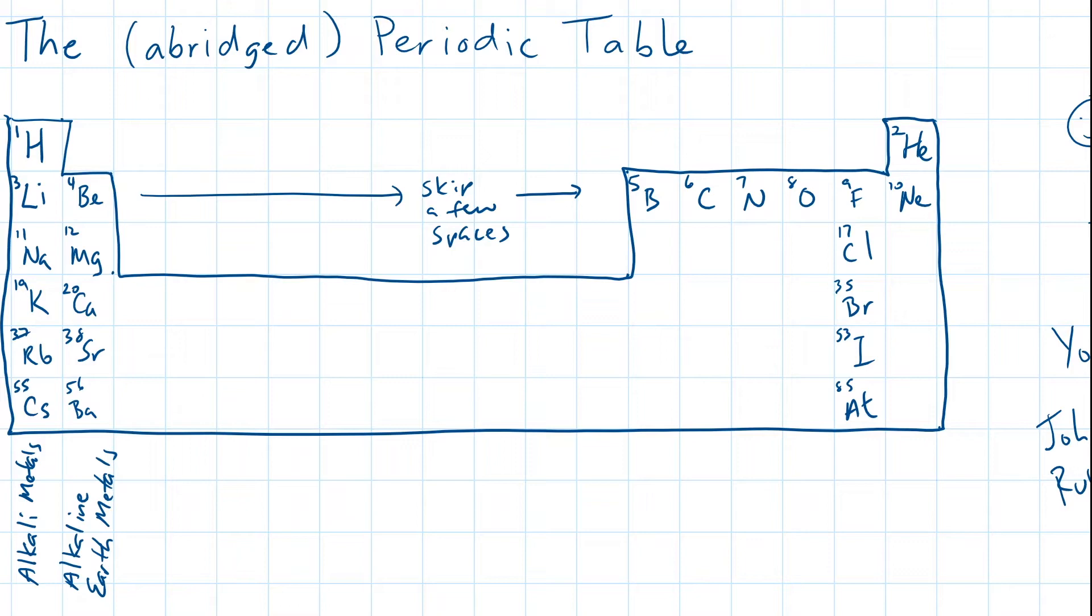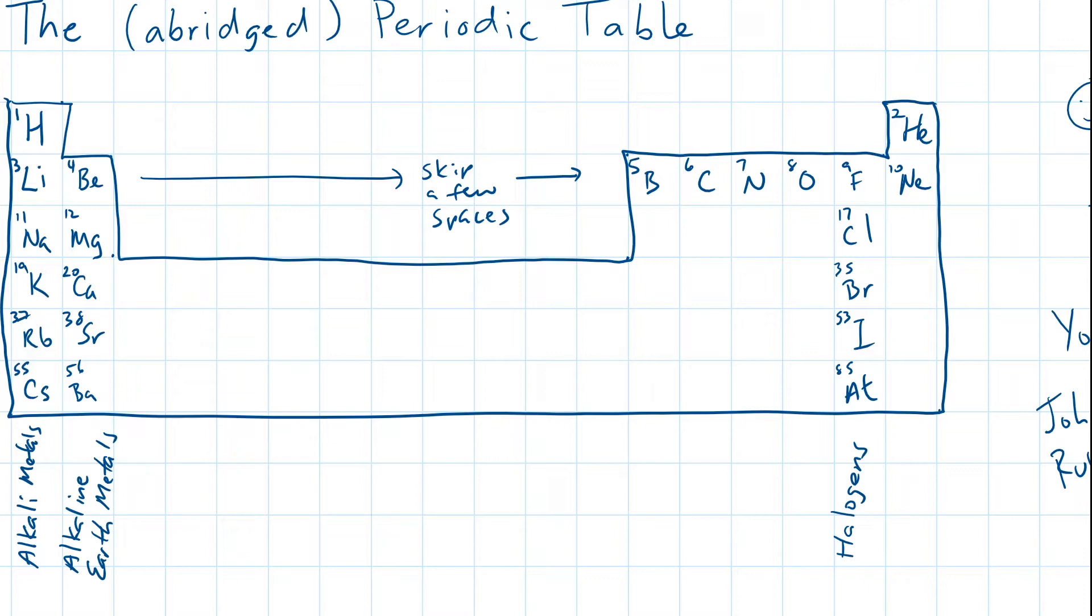In the last column, you'll find the most non-reactive elements in the periodic table: helium, neon, argon, krypton, xenon, and radon. These are known as a family of inert gases, meaning non-reactive gases. They're also known as noble gases, as these elements stand apart from the rest and don't react with other elements.